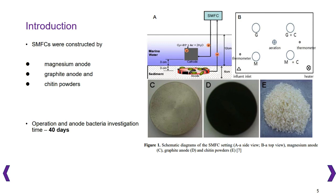In this study, four SMAFCs were constructed by using a Magnesium anode or a graphite anode, and Chitin powder was applied. Voltage and power densities of SMAFCs were monitored during the 40-day operation and their anode bacterial communities were investigated for a better understanding of the bioanode process.